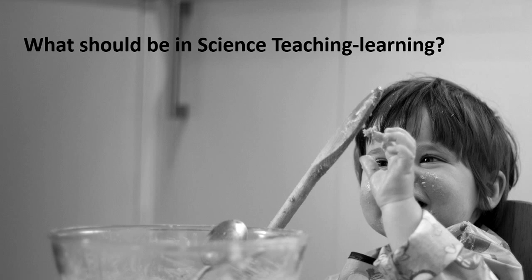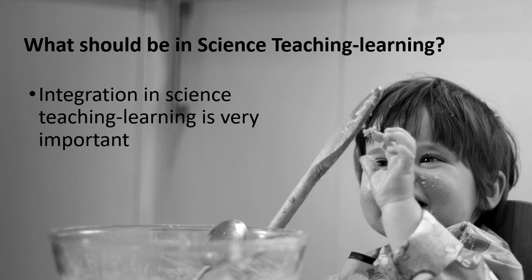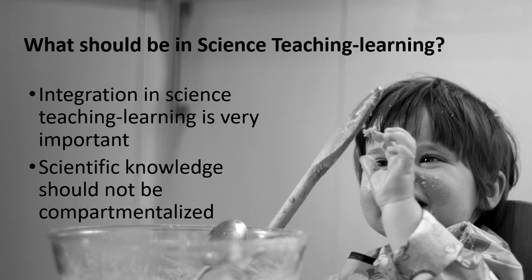This will mark a clear shift from classroom and laboratory-centered methods, which have mainly been considered as science teaching learning. Another very important aspect is that science teaching learning should be integrated — meaning the integration of different subjects. At the school level, science should not be segregated or compartmentalized. It is suggested that at least up to the secondary level, science should be taught as an integrated subject, and subjects like physics and chemistry should not be introduced separately at the lower level.